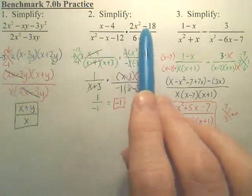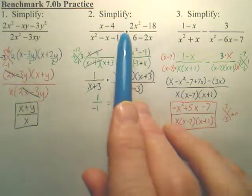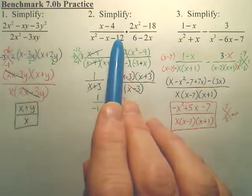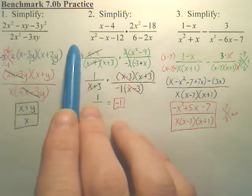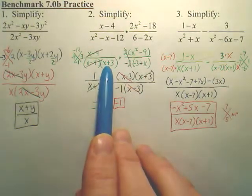Number 2. We're multiplying these two rational expressions. In order to do that, we've got to factor everything. The top can't factor. The bottom is a simple diamond, so negative 12 on top, negative 1 on bottom. These two multiply to get the top, add to get the bottom, leaving you x minus 4, x plus 3.